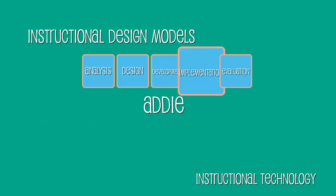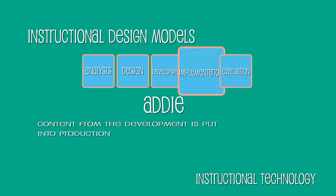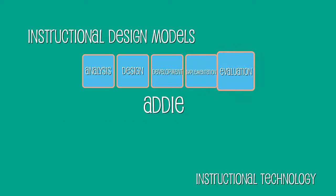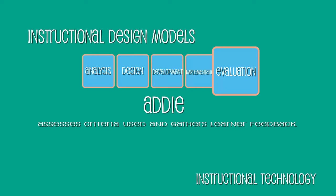During the fourth phase, the implementation phase, the content from development is put into production. The training for the learners and for the instructor or teacher are put into place and used. During the final and fifth phase, the evaluation phase, the designer assesses criteria used and gathers learner feedback. There are two types of evaluation: formative evaluations, conducted throughout with a main purpose of continuously improving the program or instruction; and summative evaluation, which consists of administering criteria-based assessments and gathering learner feedback.